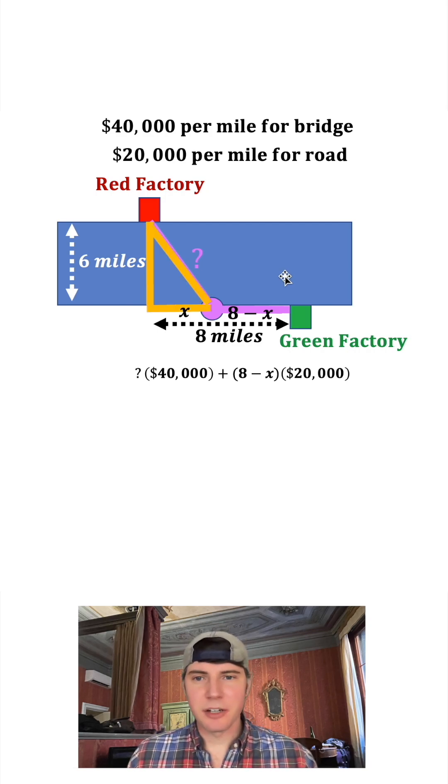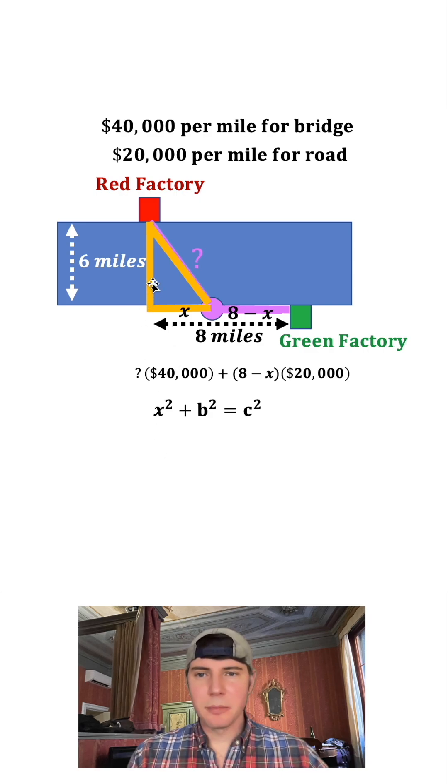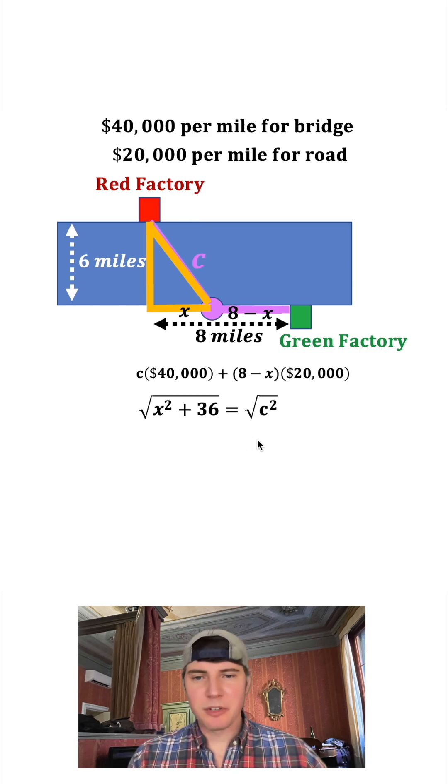Let's do another right triangle. I'll have a² + b² = c², so a² will be x², b² will be 6², and the question mark will be c. Six squared equals 36. Square root both sides, we get c equals √(x² + 36).